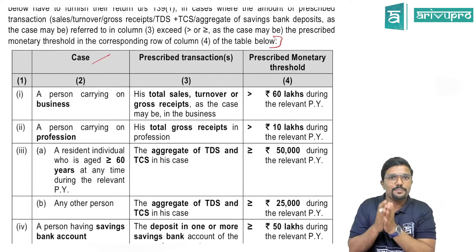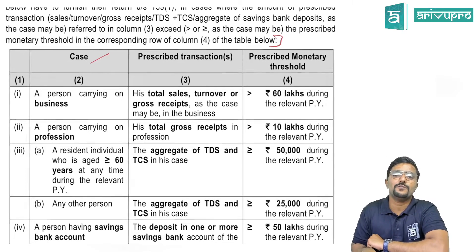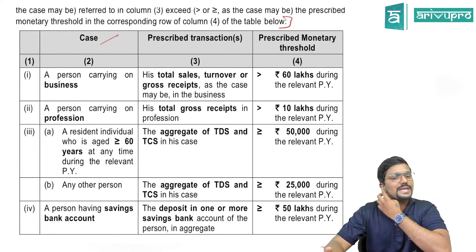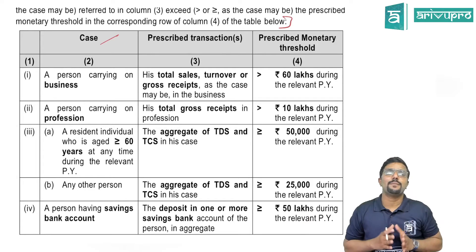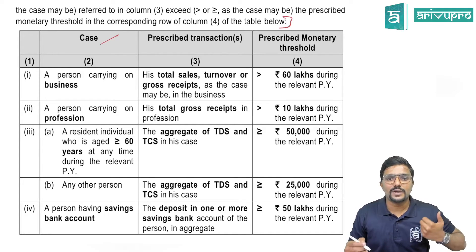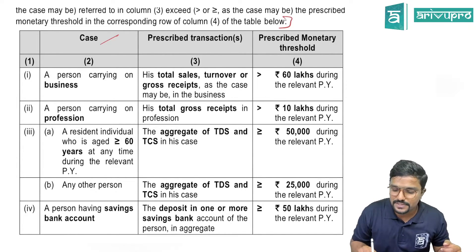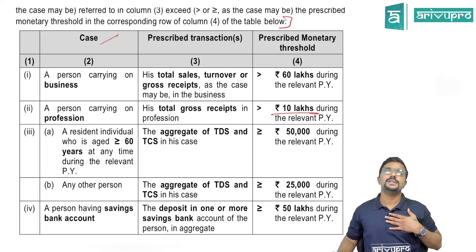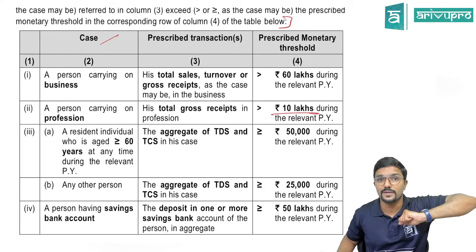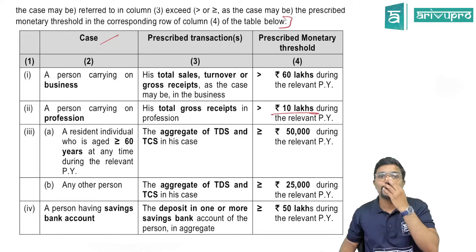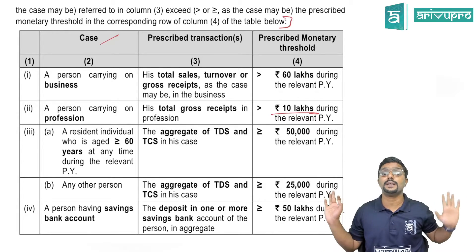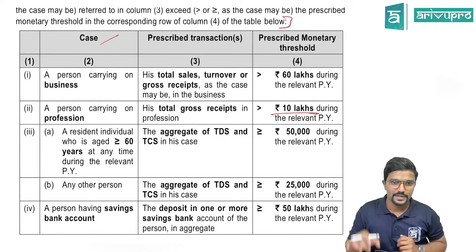For a person carrying on a profession — for example, a practicing Chartered Accountant — if the gross receipts from the profession exceed 10 lakh during the relevant previous year, it is mandatory to file returns. Note: they are talking about gross receipts, not income or profit — same as for business where they spoke about sales turnover or gross receipts, not profit.